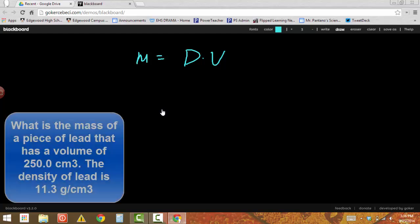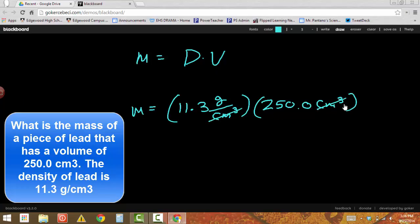All right. So let's do an example. If mass is equal to density times volume, let's say we want to know what's the mass of a piece of lead that has a volume of 250 cubic centimeters. Okay. So the mass is what I'm looking for. The density of lead is 11.3 grams per milliliter or grams per cubic centimeter. And my volume is 250. I'll make it 250.0 cubic centimeters. Okay. So those will cancel out there.